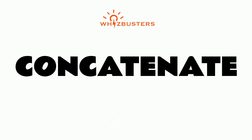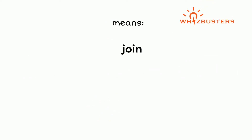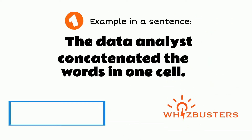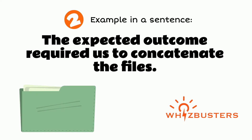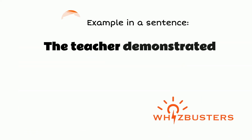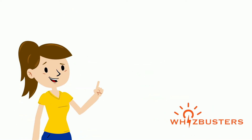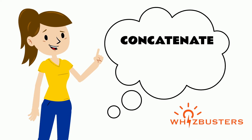Concatenate. To concatenate means to join or link together. For example: the data analyst concatenated the words in one cell; the expected outcome required us to concatenate the files; the teacher demonstrated how to concatenate the strings to create a sentence. So next time you want to join or link things together, why not use the word concatenate instead?